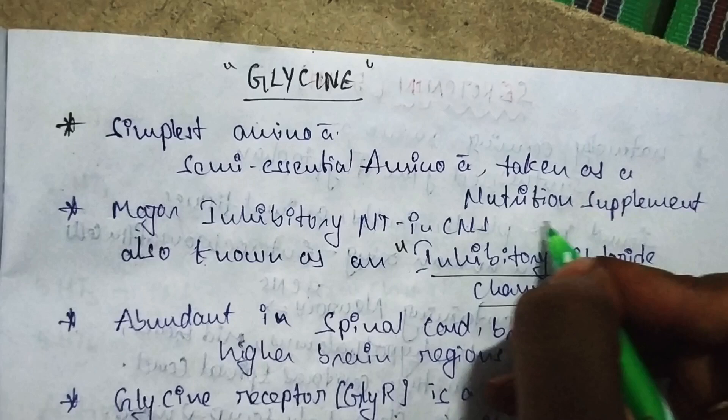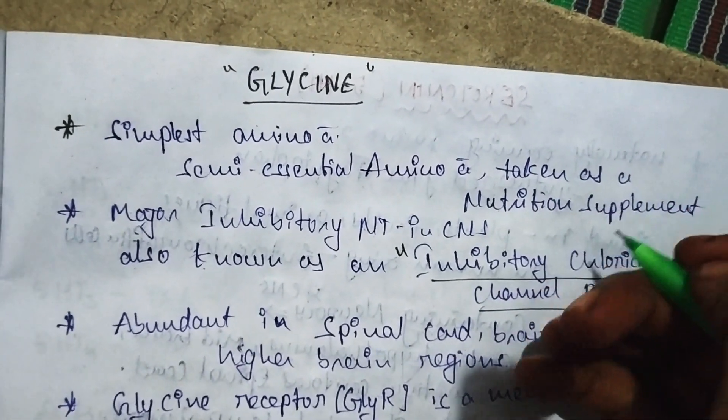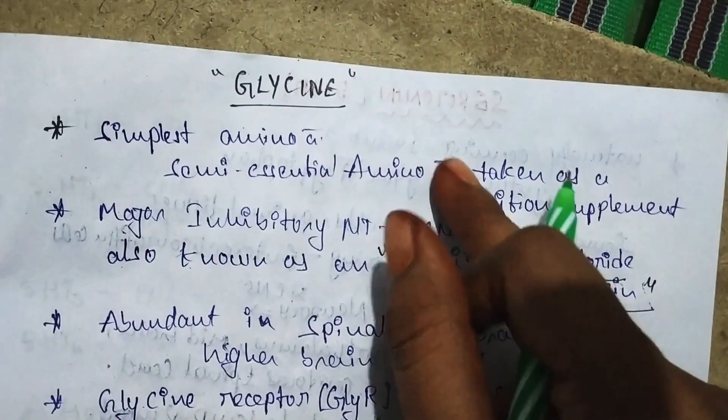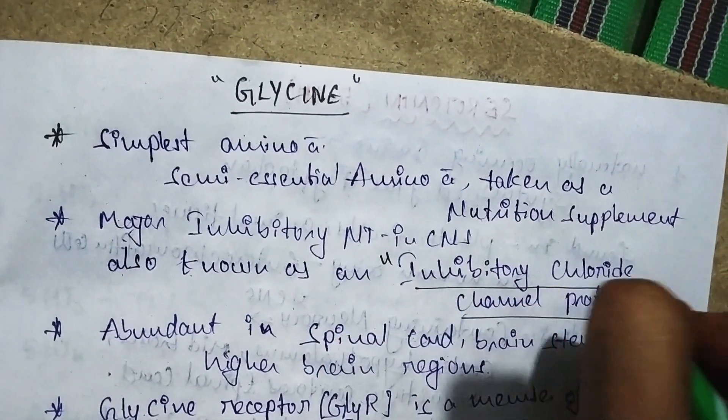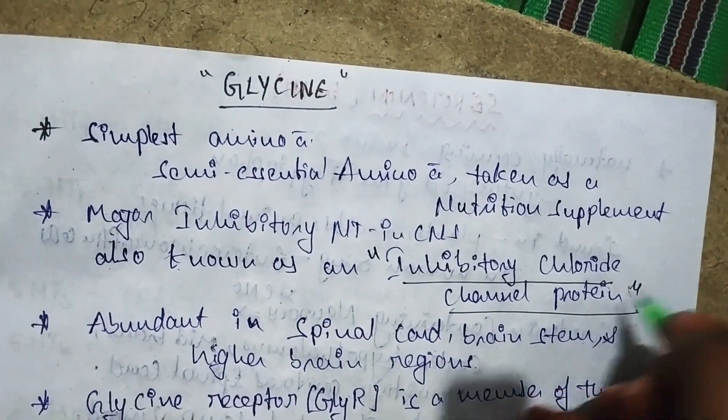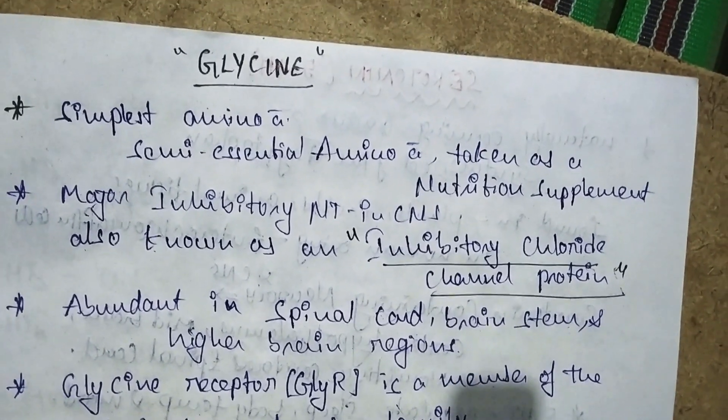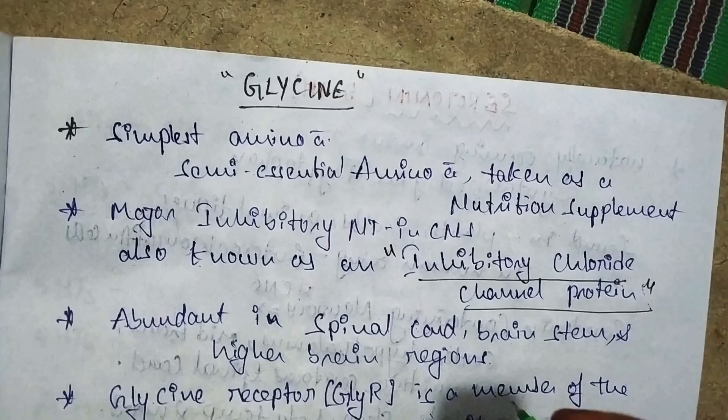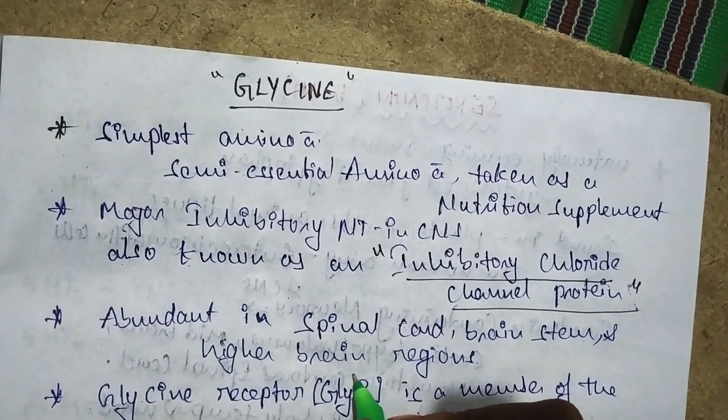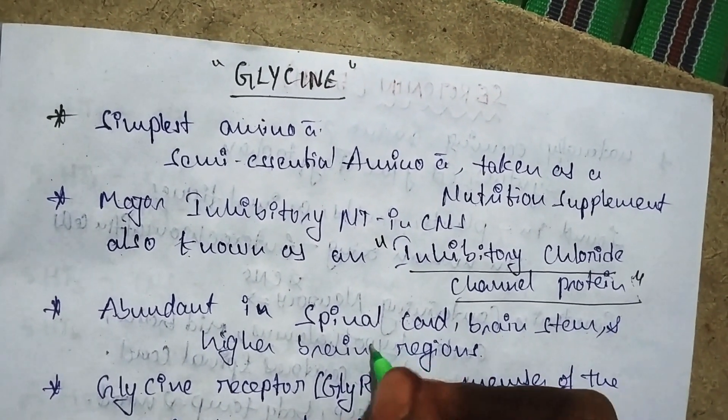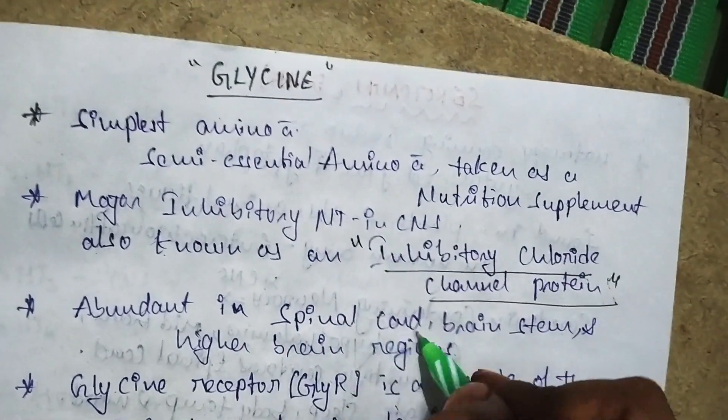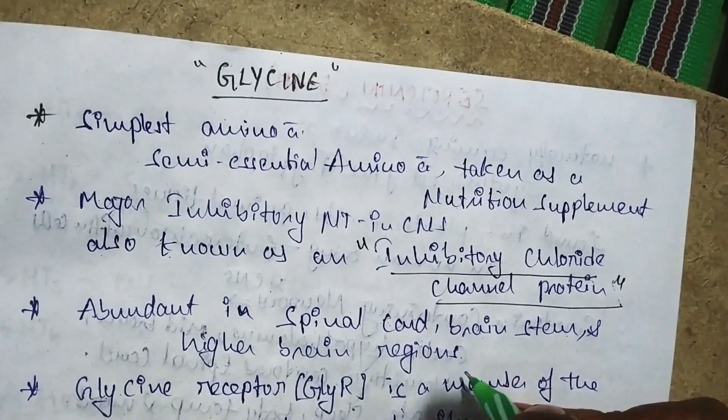It is taken as a nutrition supplement and is also the major inhibitory neurotransmitter in the CNS. It is also known as an inhibitory chloride channel protein. Glycine is abundant and present in the spinal cord, brain stem, and higher brain regions.